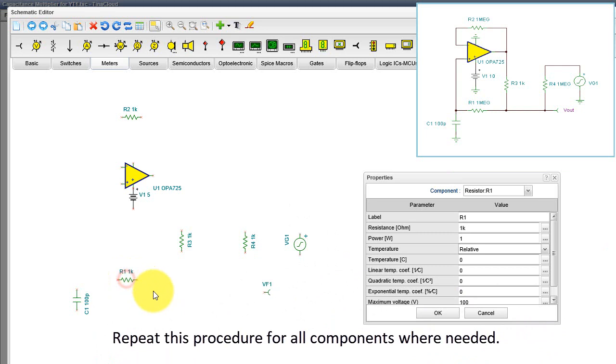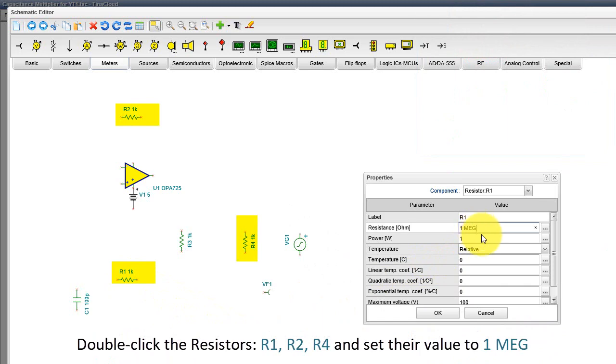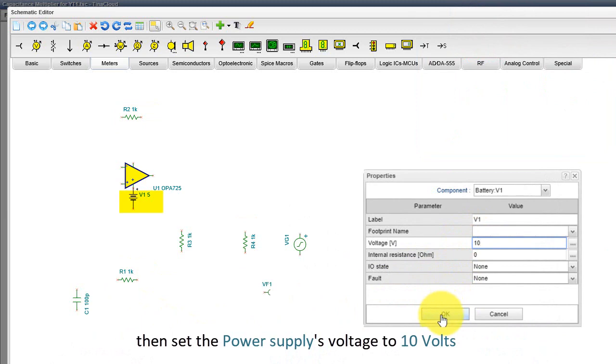Repeat this procedure for all components where needed. Double-click the resistors R1, R2, R4 and set their value to 1 meg. Then set the power supply's voltage to 10 volts.